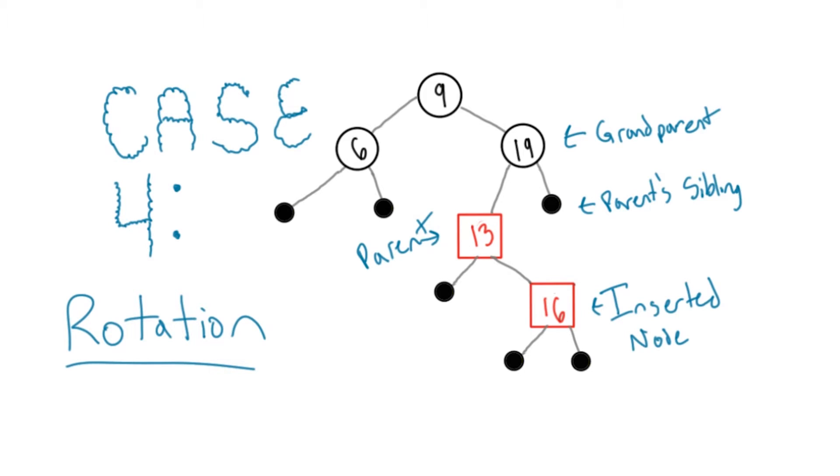In a rotation, you shift a group of nodes around in a way that changes the structure of the tree, but not the order of the nodes. Keep in mind that this is still a BST, so we need to keep our elements in strict order.